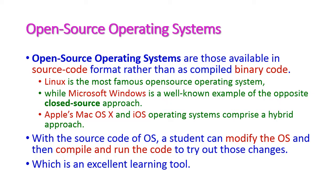Open source operating systems are available on the internet in source code format rather than compiled binary code. Closed operating systems are available only in binary code format. For example, Linux is the most famous open source operating system, and Microsoft Windows is a closed source operating system — we cannot change anything in Windows because we only get the binary code. Apple Mac OS and iOS use a hybrid approach: some parts are open source, some are closed source.